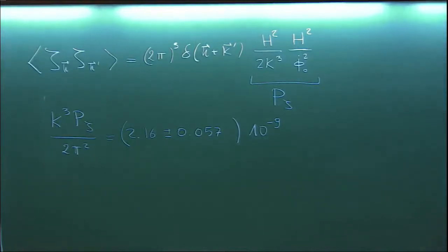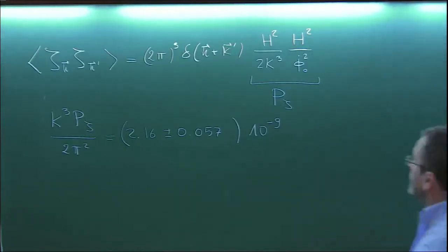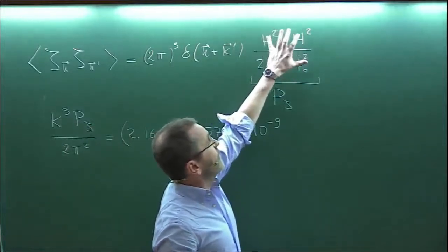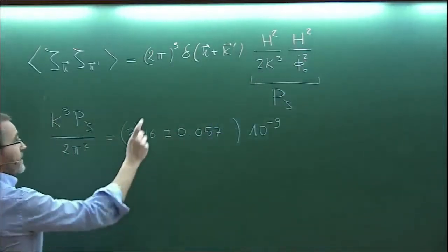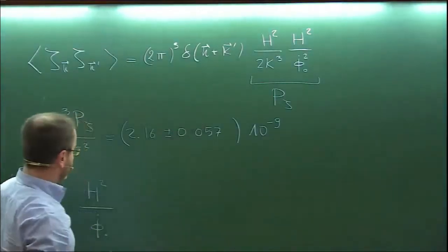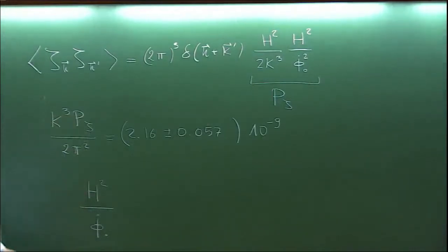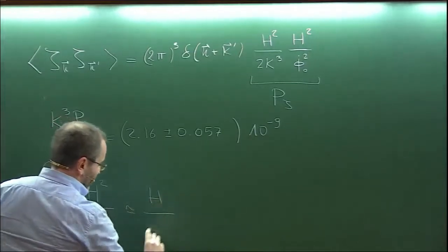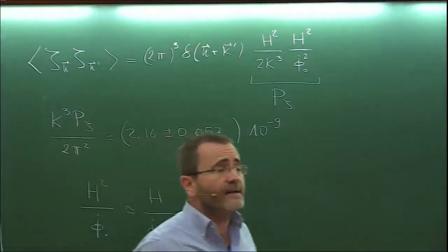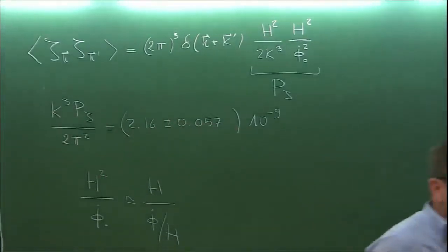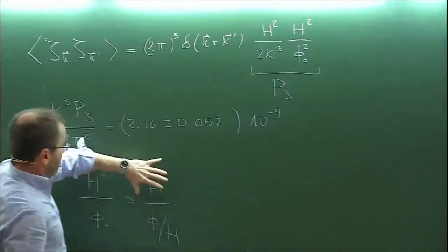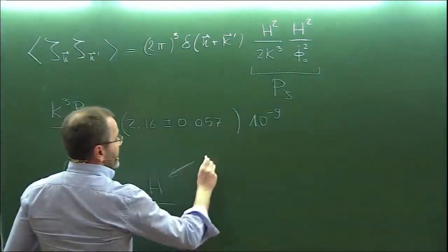Since most of you will not work in inflation, please remember the following: an estimate — the typical fluctuation of zeta is of order H² over φ-dot, or the square root of this. How should you remember this heuristically? In the numerator there are quantum fluctuations. For a field in de Sitter space, H is the quantity that tells you how much a scalar field will fluctuate — the two-point function is H² over k³.